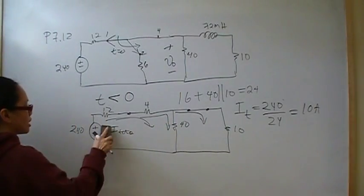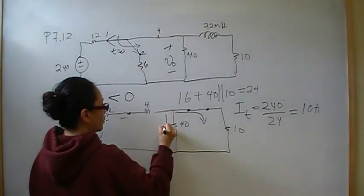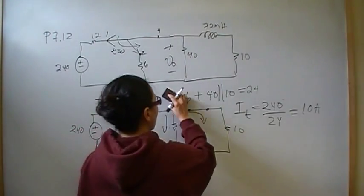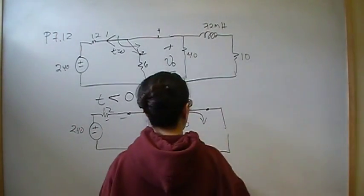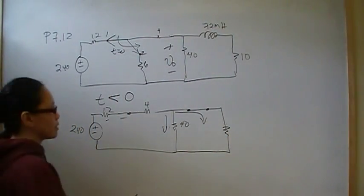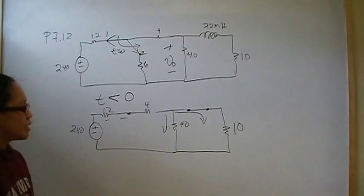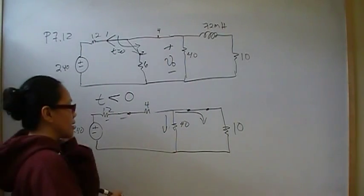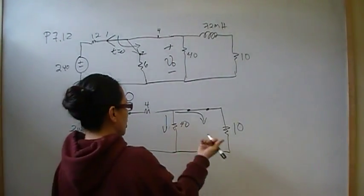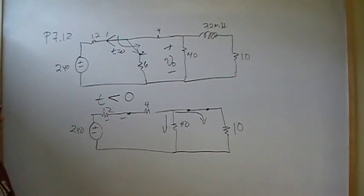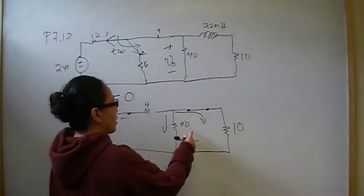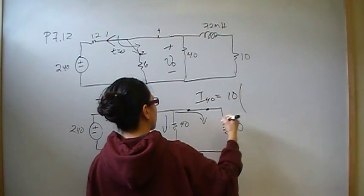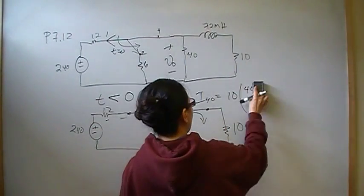So we have 10 amps going in here, and it's splitting. Splitting, and some of it will go through the 40, and then some will go through the 10. So now we're going to use current division to figure out what's going through the 10 and the 40. So current division says that the current will split like this. In proportion to the equivalent resistance of all the parallel connected branches divided by the branch that you're interested in. I'm interested in both. So let's just pick one. So 40, we know 40 in parallel with 10 is 8. We have to calculate that already.